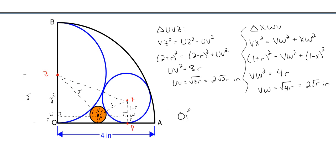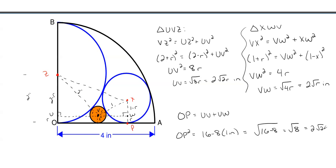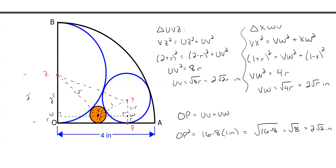As mentioned earlier, OP equals UV plus VW, because they are parallel to one another just shifted up by r. From earlier, OP squared equals 16 minus 8 times the radius of the blue circle X, which was one inch, so OP equals the square root of 16 minus 8, which is the square root of 8, or 2√2 inches. So plugging everything in: UV plus VW equals OP, giving us 2√(2r) plus 2√r equals 2√2.